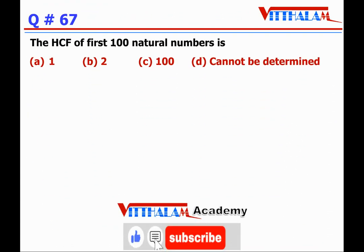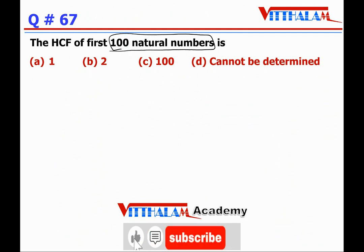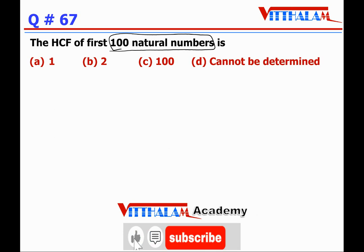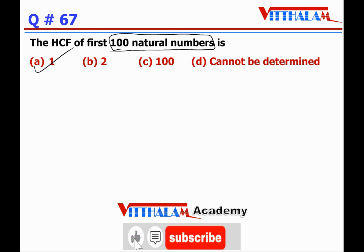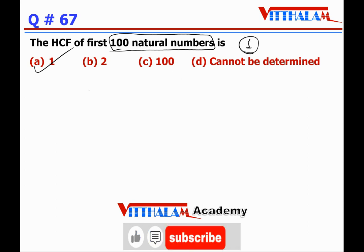Question 67: The HCF of the first 100 natural numbers (1 to 100) is? Since natural numbers start from 1, and 1 is a factor of every number, the HCF of 1 to 100 is 1.